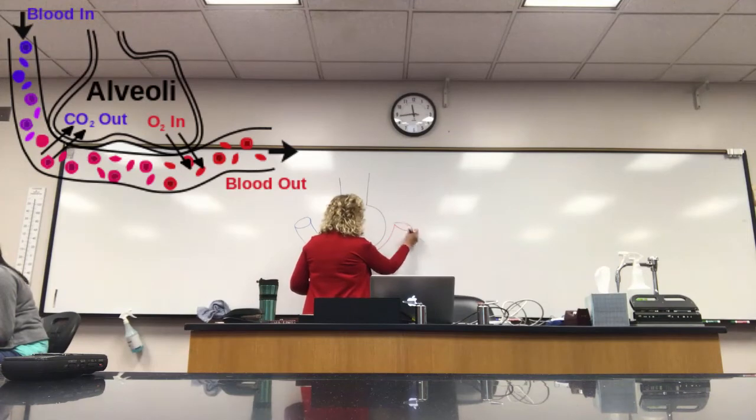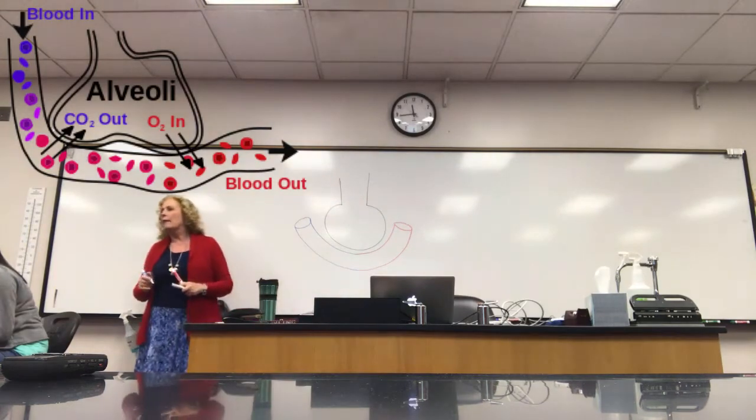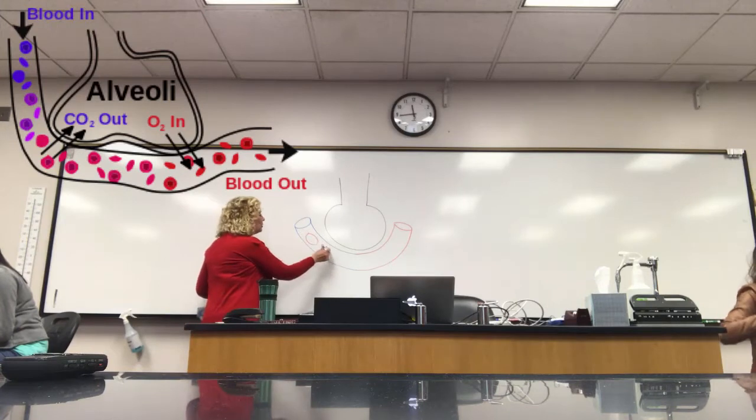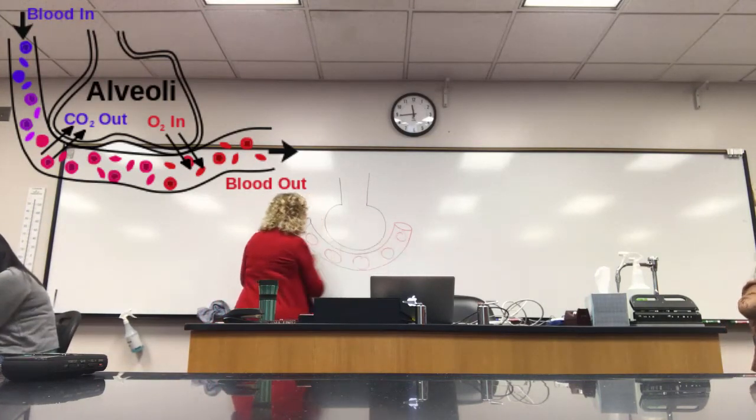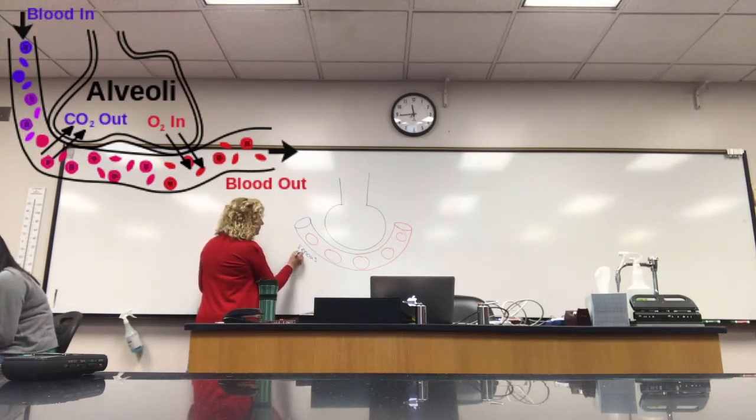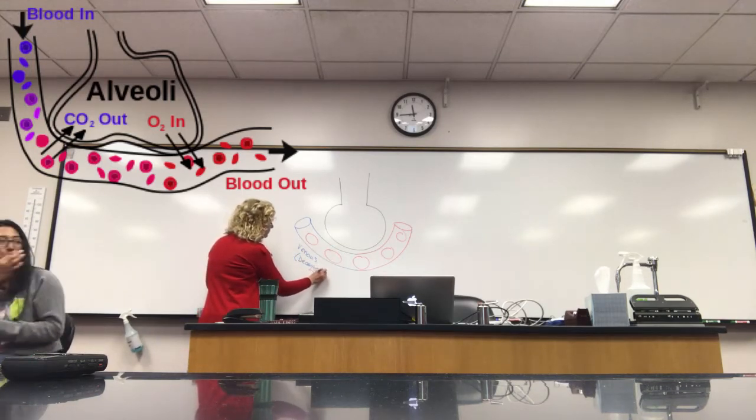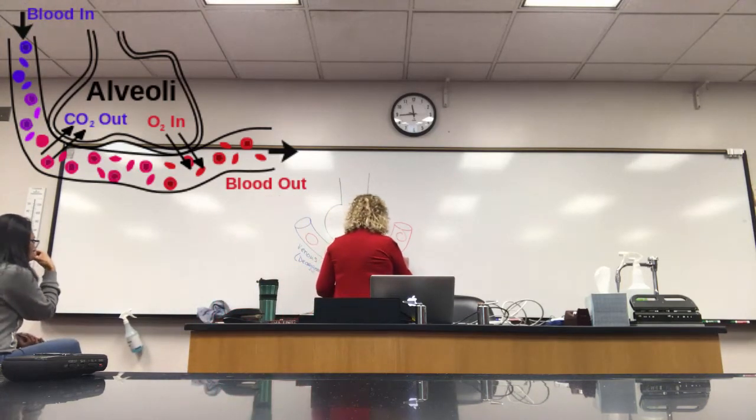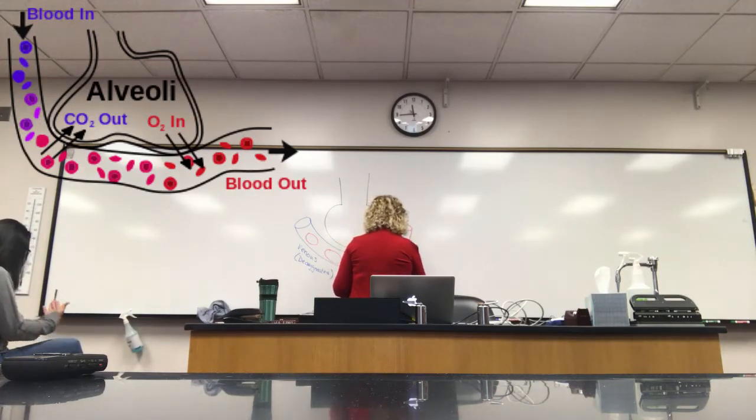So if it's blue, this is going to have less oxygen in the blood. If it's red, it's going to have more oxygen. So typically, if our red blood cells are low in oxygen, it's our deoxygenated blood, we would say this is the venous side of the capillary.